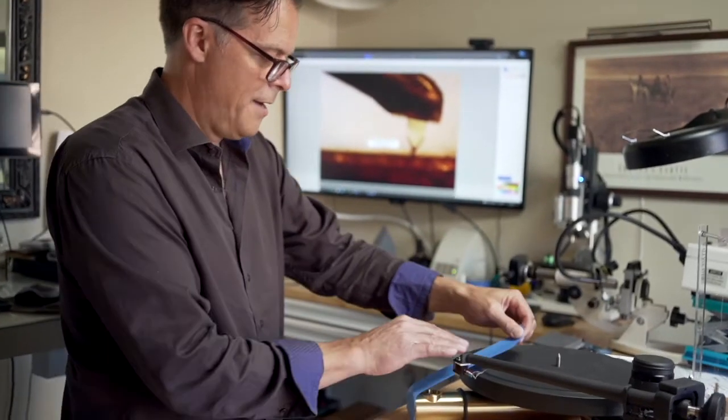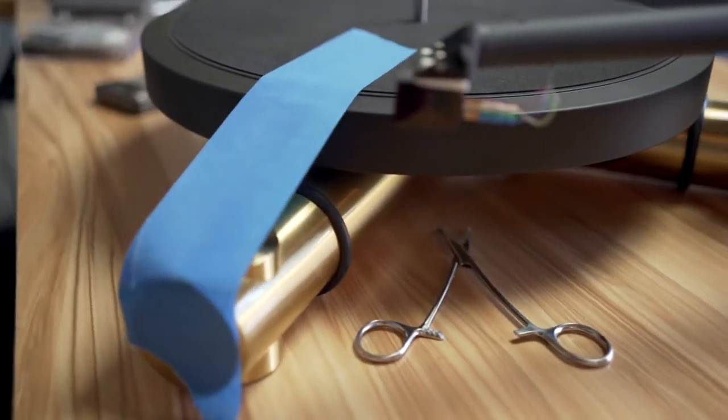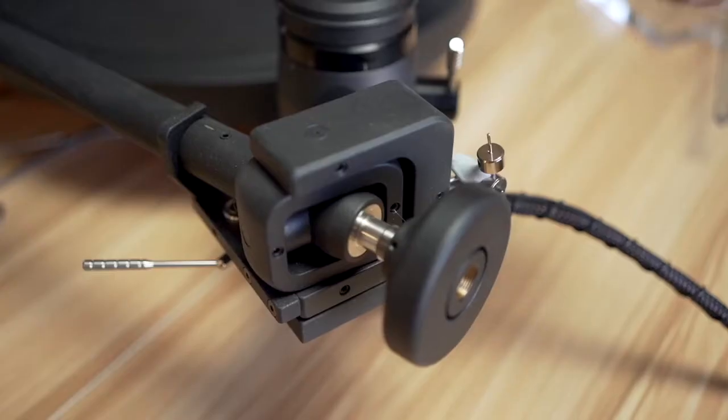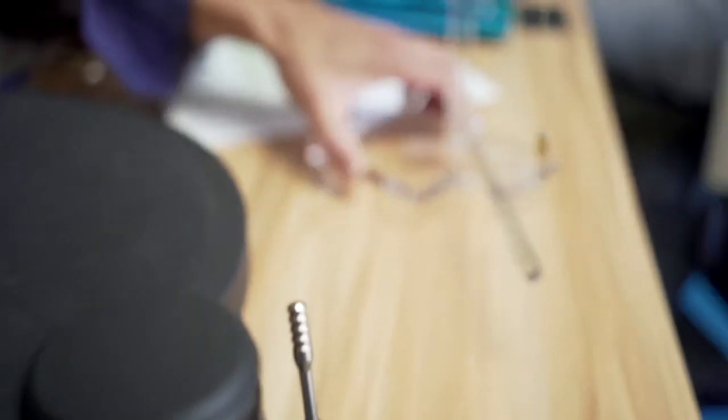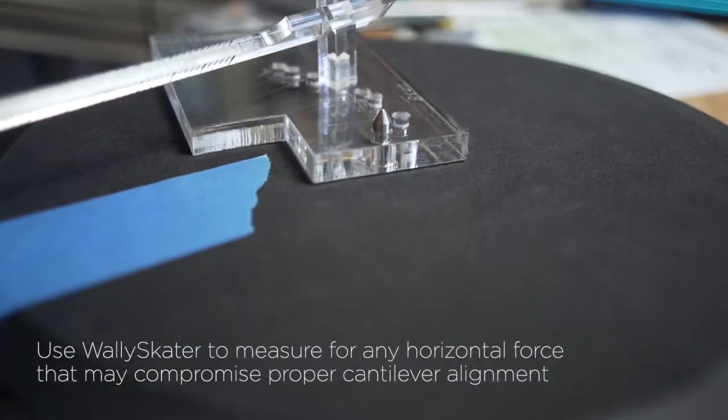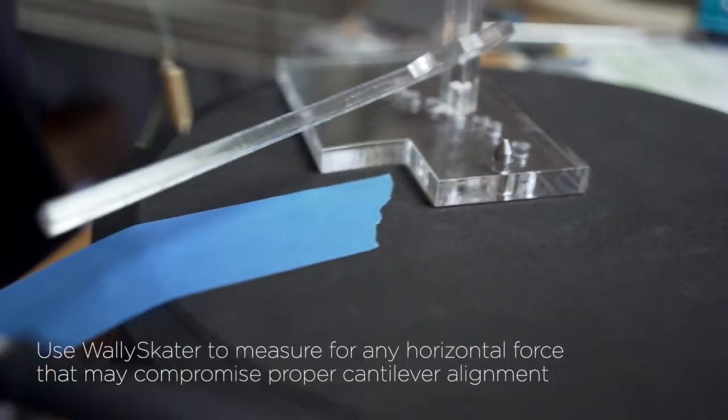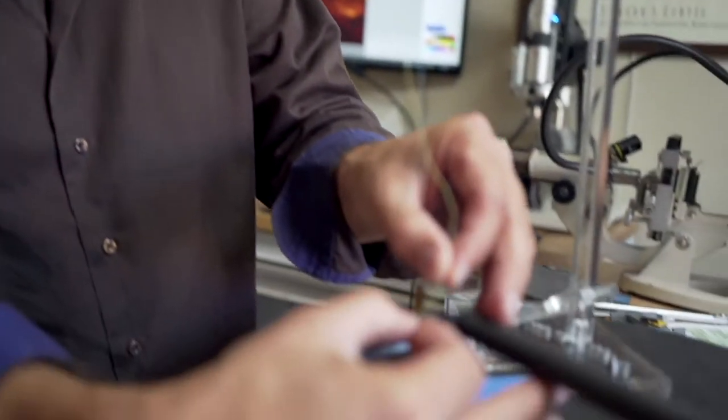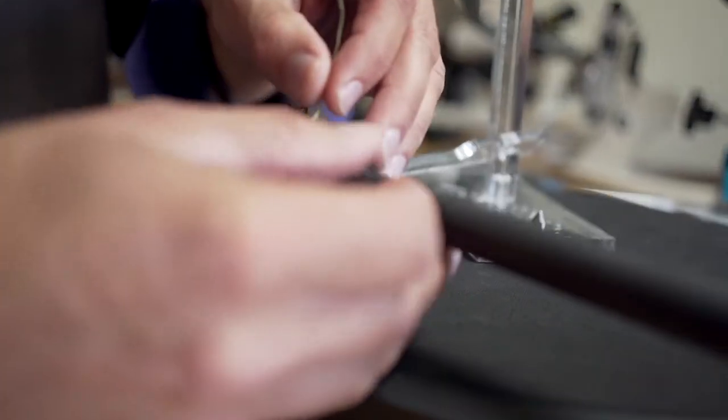Immobilize your platter. Defeat your anti-skating mechanism. And we're just going to measure to make sure that the tonearm itself doesn't have its own internal horizontal forces pushing it one way or another, which would compromise the ability for us to accurately align our cantilever.